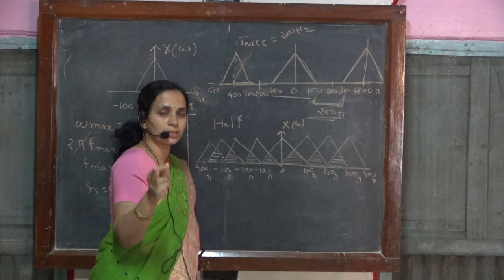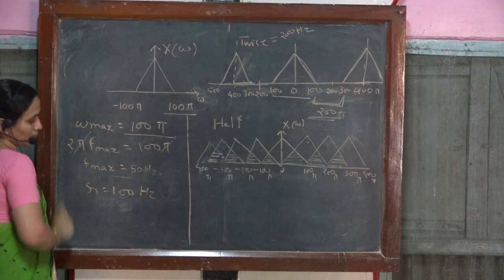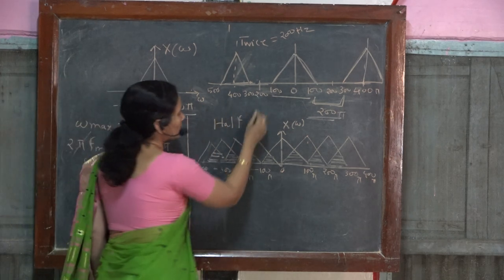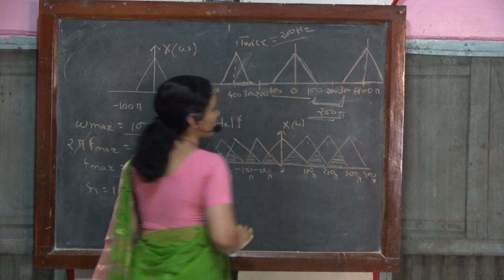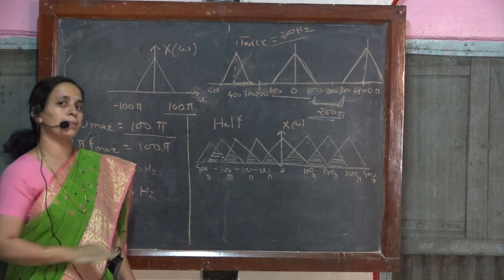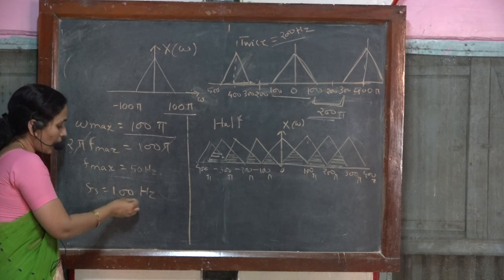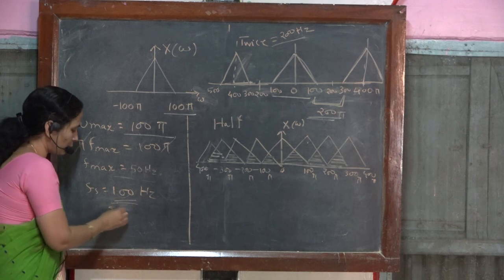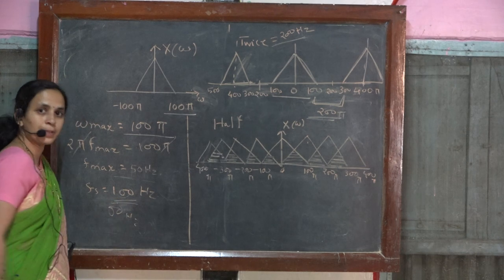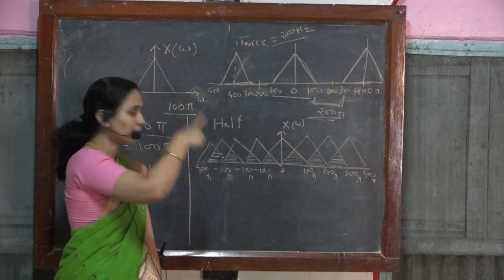We will be able to see if we try to plot the frequency spectrum of the signal which is sampled at the sampling frequency twice greater than the maximum frequency. Now in case if we don't follow that sampling criteria and if we sample the signal with a sampling frequency half than that of the sampling rate, that means 50 hertz.